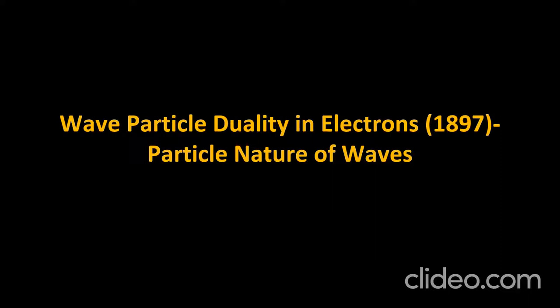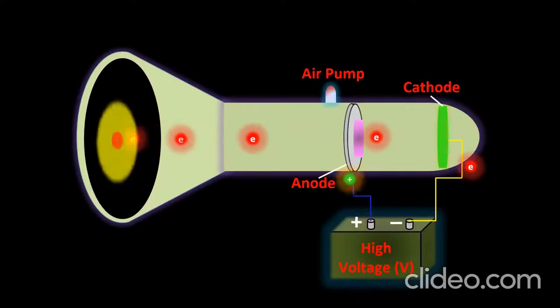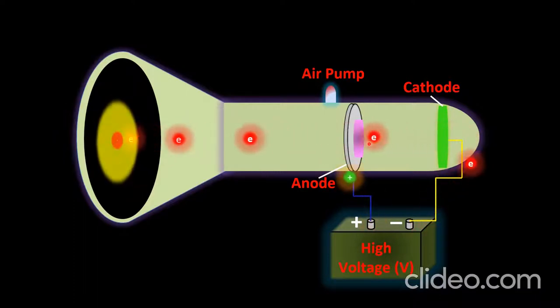Now we will talk about the particle nature of waves. We previously discussed the wave nature of particles; now we discuss the particle nature of waves. There was a scientist named J.J. Thomson. He was experimenting with the passage of electricity through a partially filled gas discharge tube, also called a cathode ray tube.